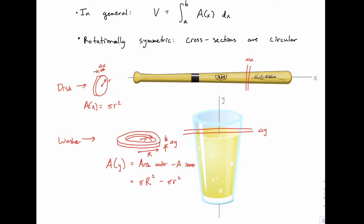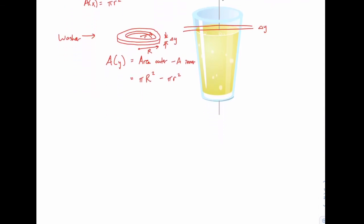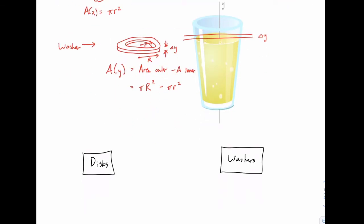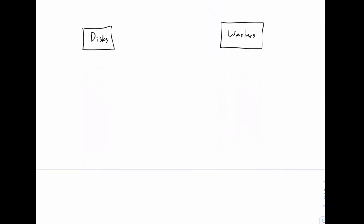With rotationally symmetric objects, finding the area function boils down to finding a radius or two values for a radius. Let's look at a couple of examples — I'm going to do two examples side by side, one using disks and one using washers, so we can observe the differences. Both of these examples will be integrals in terms of x, but recognize that we'll deal with y in future examples.